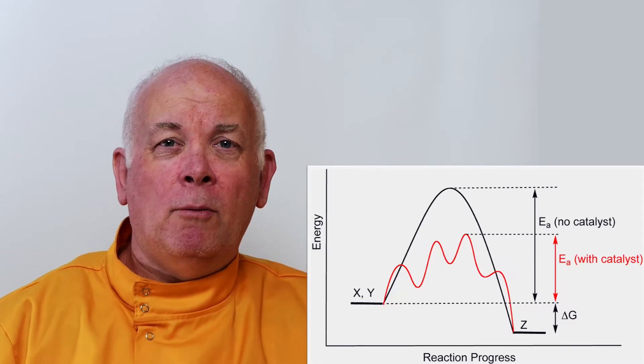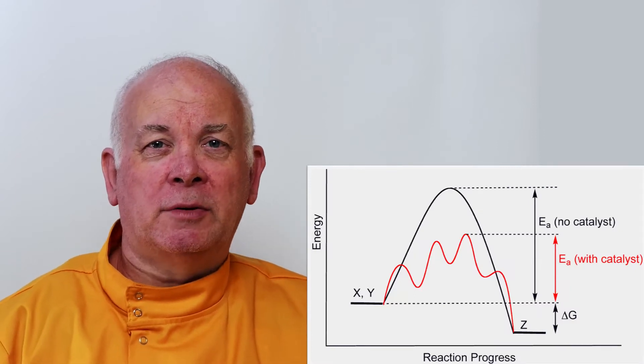Looking at catalysts, they can speed up the rate of reaction without actually being used up themselves. What they do is they form an intermediate compound, get something to work, and they are restored back to as they were. So the catalyst can be used again and again.